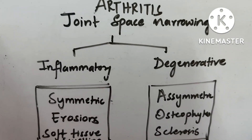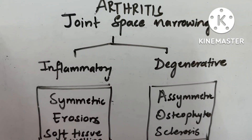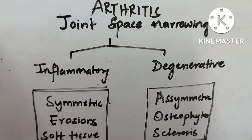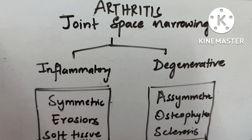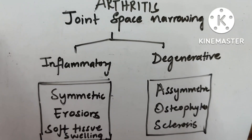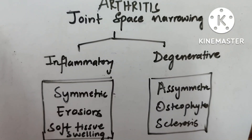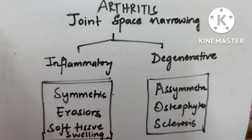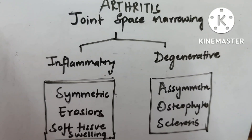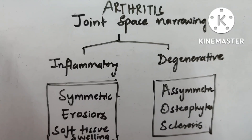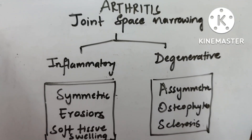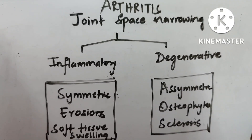This video covers different types of arthritis, the joints involved, and the joints spared. In arthritis there is joint space narrowing, which can be symmetric or asymmetric. If the narrowing is symmetric with erosions and soft tissue swelling, it is categorized as inflammatory arthritis. If asymmetric with osteophytes and sclerosis, it is degenerative arthritis. This is the broad classification of arthritis.